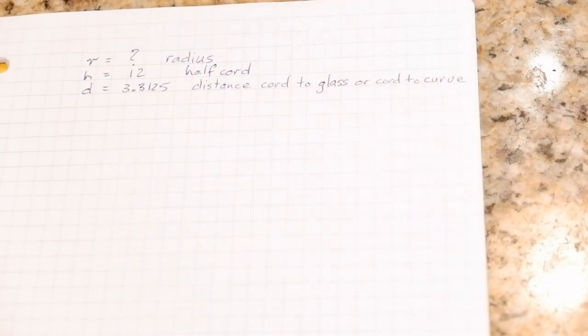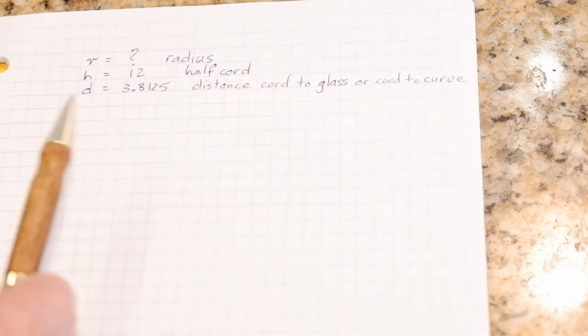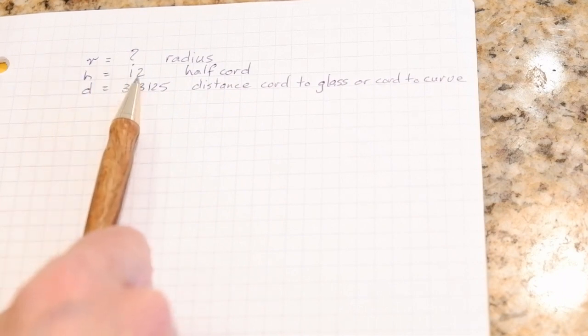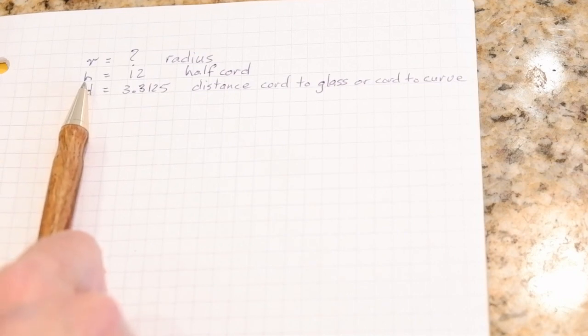All right, so what are we looking at? We're searching for the radius and we've measured a couple of things. We measured the chord—the full chord as 24 inches. So H is going to represent half of that, so the half chord is 12 inches.